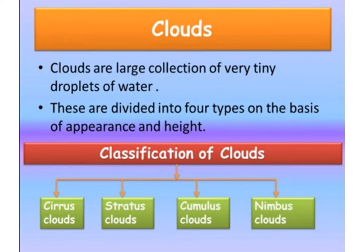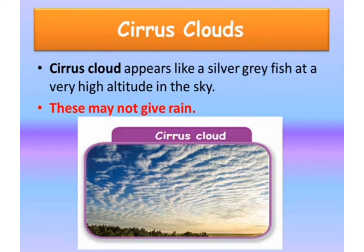What are the four types of clouds? The four types of clouds are cirrus clouds, stratus clouds, cumulus clouds and nimbus clouds. Cirrus clouds appear like a silver grey fish at very high altitude in the sky. These may not give rain. It is not a rain cloud — it appears very high in the sky, so it is not going to give us rain.